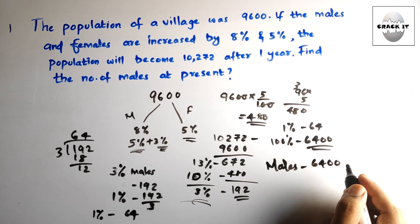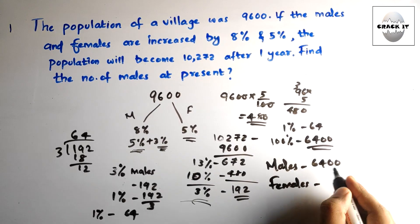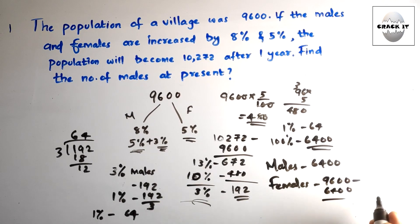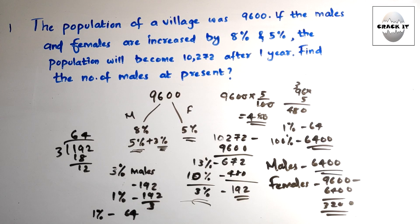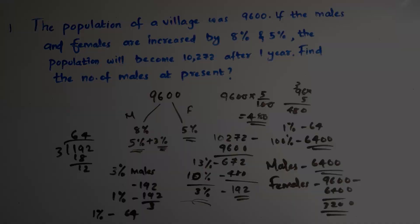To find the number of females: 9600 − 6400 = 3200. In this way we can calculate any type of percentage question. Whatever value is given, we convert it to a percentage and solve it very easily. Thank you.